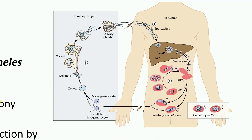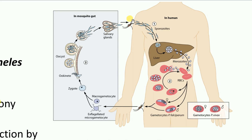Once the gametocytes have been sucked in by the mosquito, they make their way into the mosquito's gut, where they differentiate into a macrogametocyte and a microgametocyte. These give rise to gametes which fuse together to form a zygote. The zygote develops into an ookinete, which further develops into an oocyst. Inside the oocyst, the zygote divides multiple times to form sporozoites. Upon rupture of the oocyst, the sporozoites are released and travel to the salivary glands of the female Anopheles mosquito. When this mosquito bites another healthy human being, it injects these sporozoites, once again starting the cycle of infection.